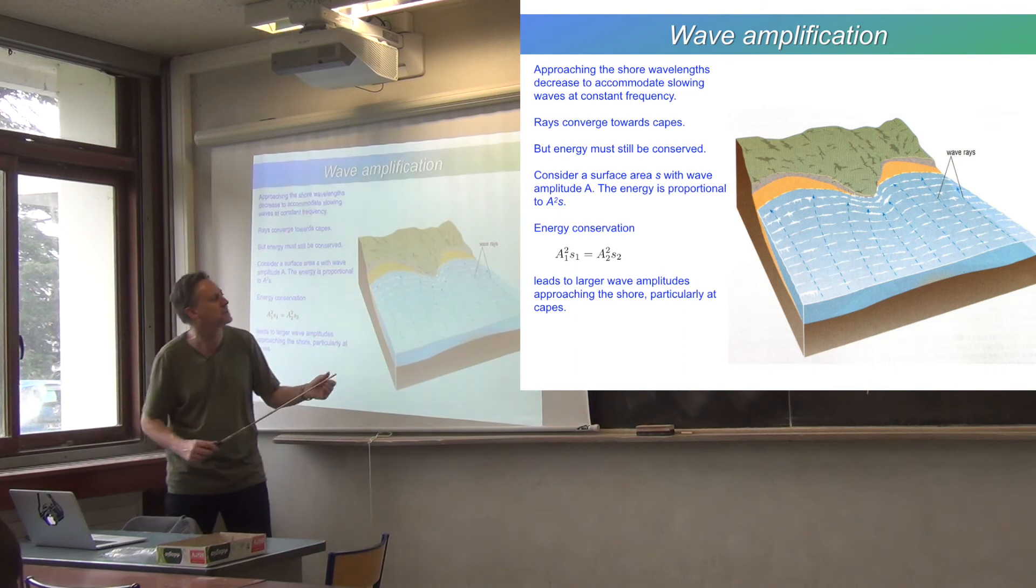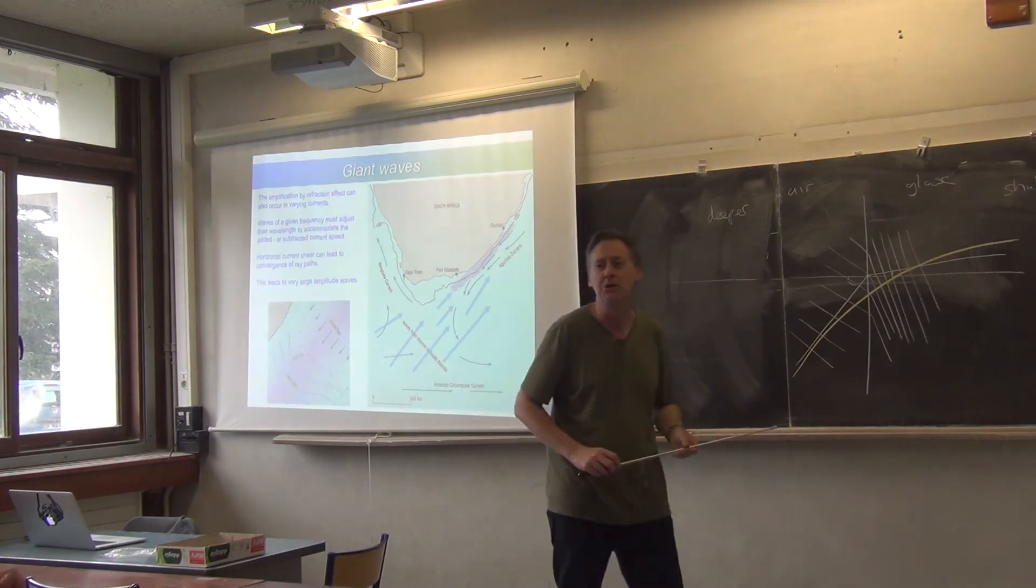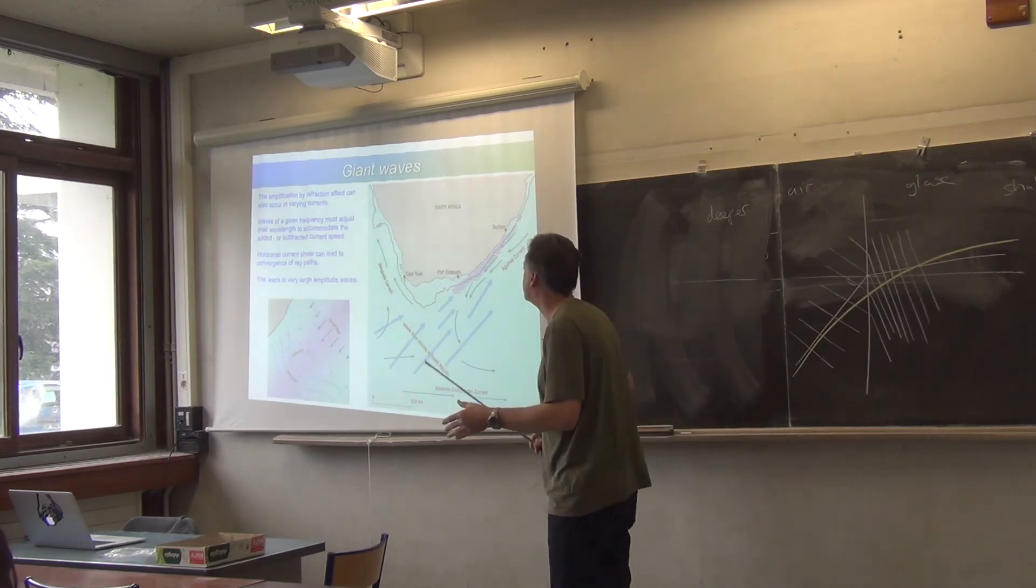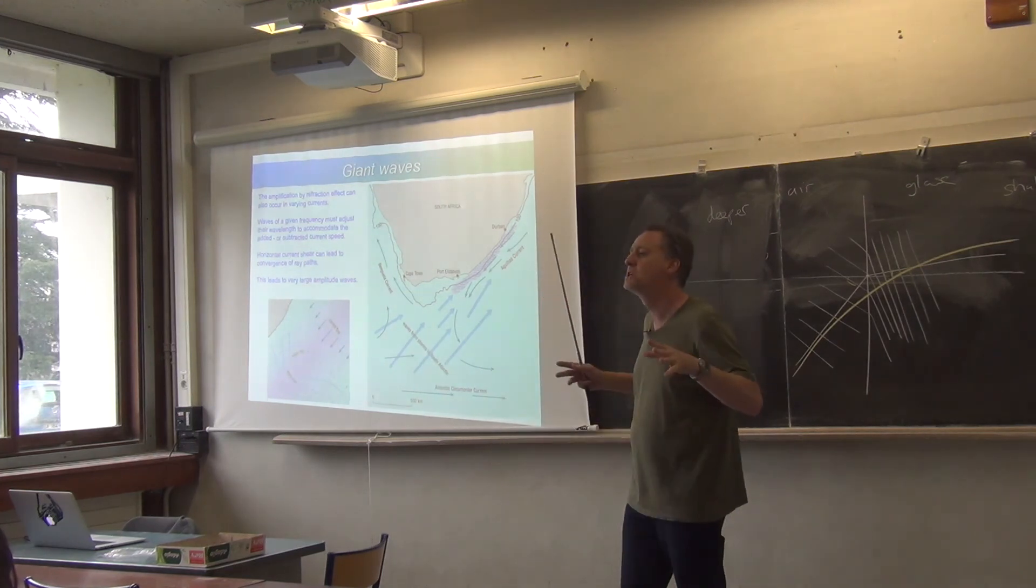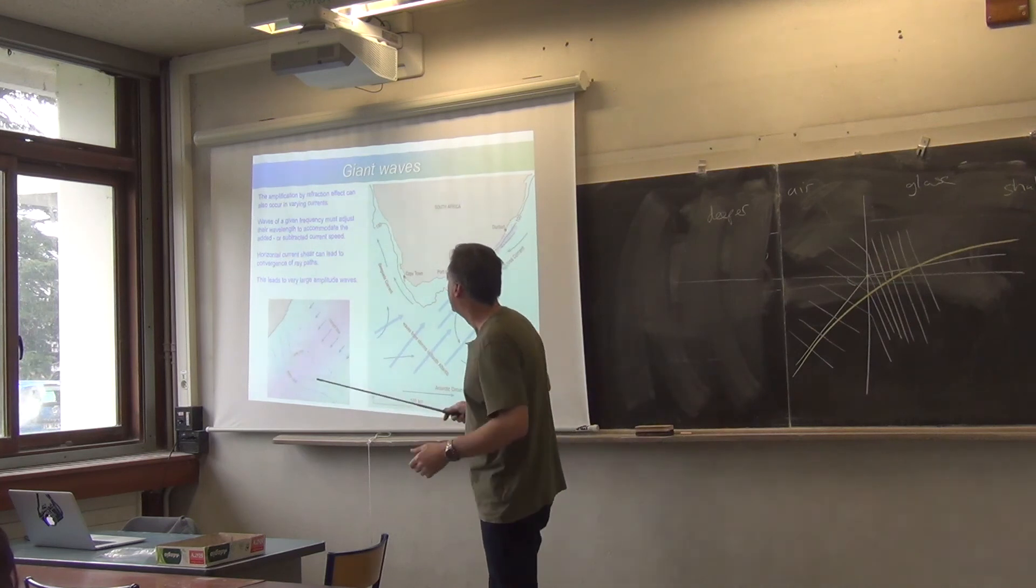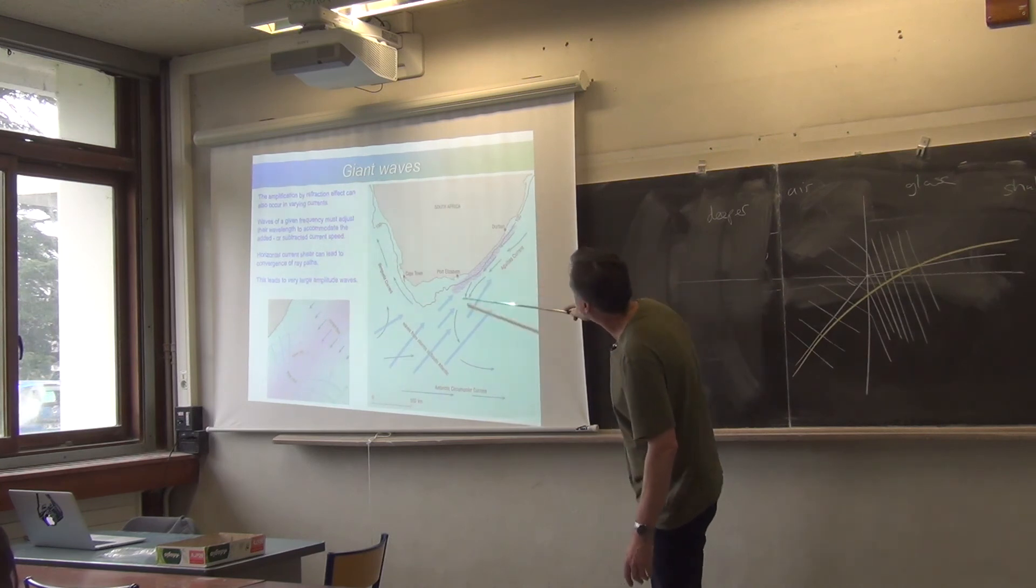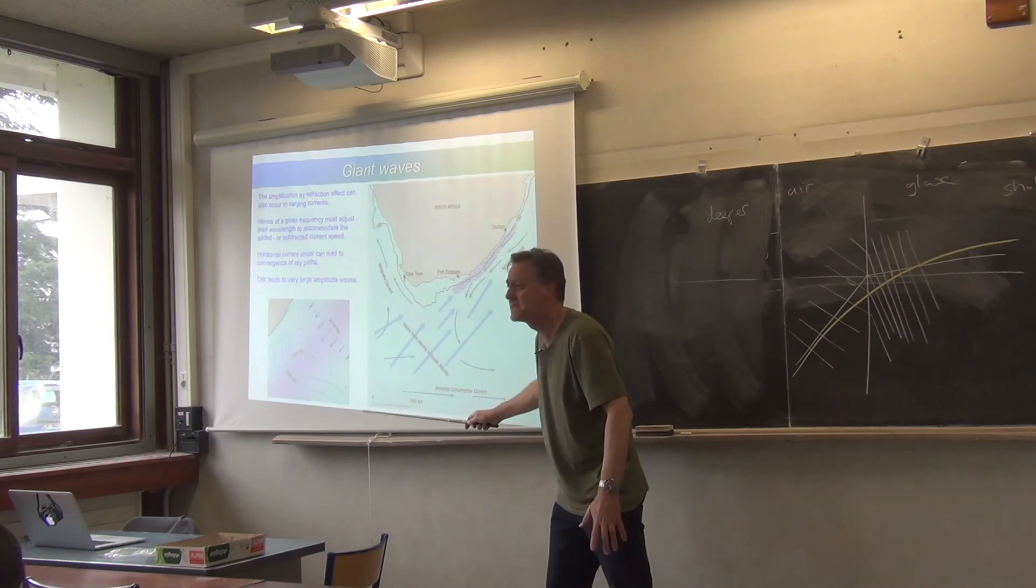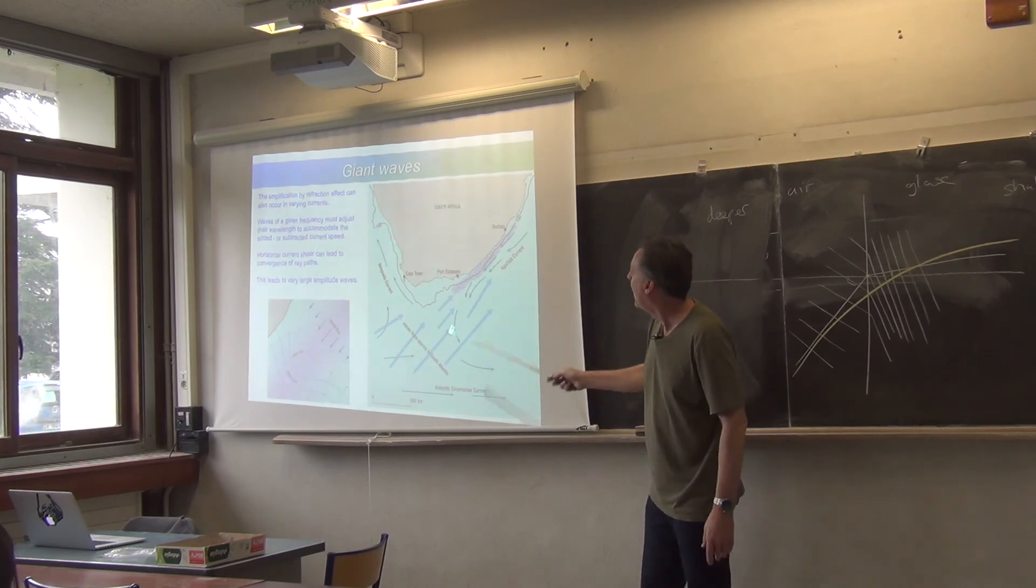Now this effect can also be seen in the deep ocean. It's not because of the depth of the ocean, right? We're now with deep water waves. But there is a situation where you can have that kind of refraction effect which will cause convergence of rays. And that is, here's South Africa, right? Here's the Agulhas Current, which comes down the coast here and then switches around into the Antarctic Circumpolar Current. And very often they have big storms in the Antarctic Circumpolar Current, and so they can set off this swell which comes towards the north.